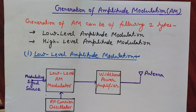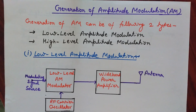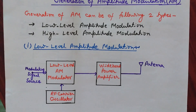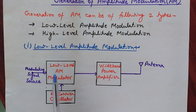These two ways are low-level amplitude modulation and high-level amplitude modulation. Let's understand the difference between these two ways with the help of a block diagram first, then I will explain in detail.